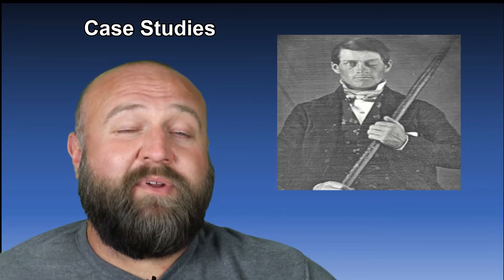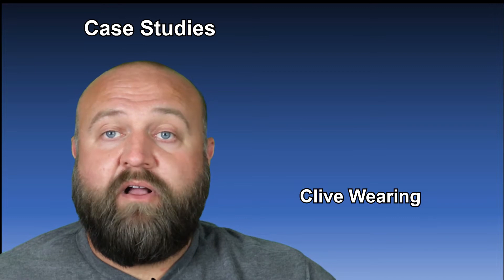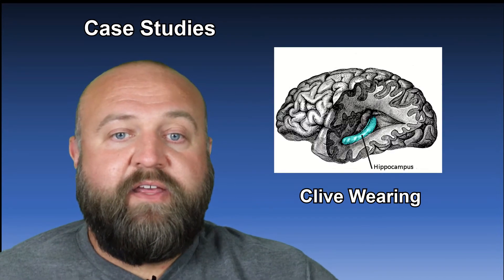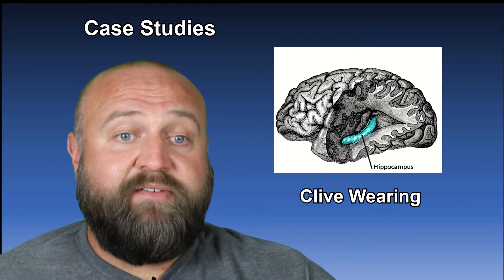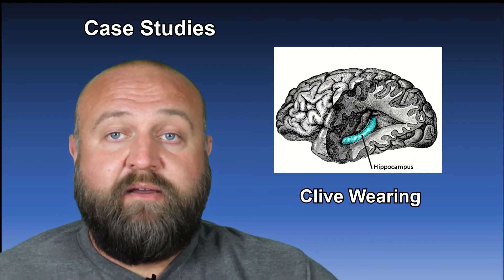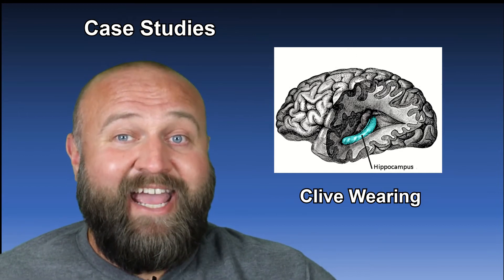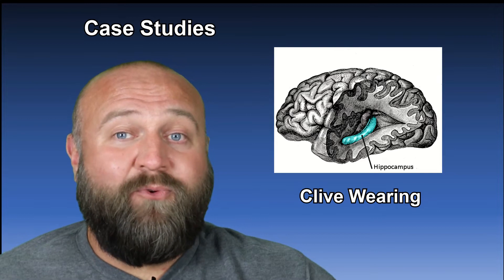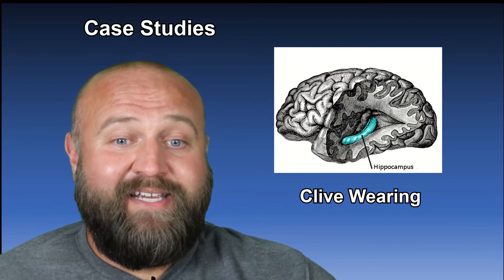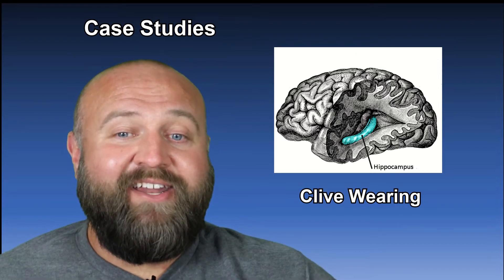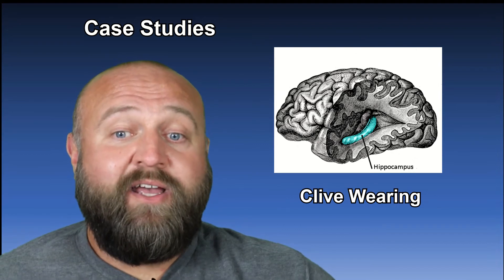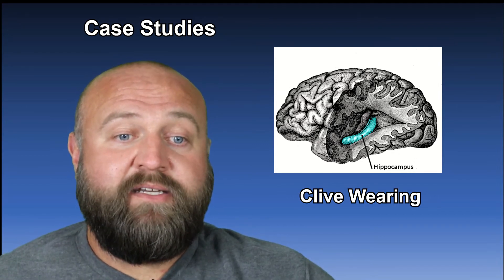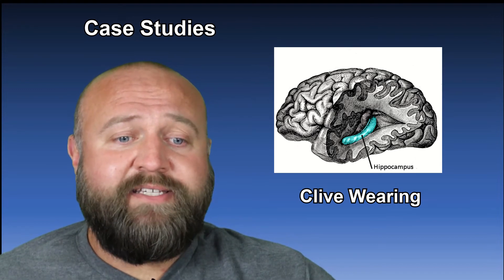Another example is a man named Clive Wearing. Clive experienced a viral infection in the 1980s that damaged a part of his brain called the hippocampus, which is important for making new memories. When it was damaged by the infection, it damaged Clive's ability to form new memories. Clive is still alive today, in his 80s, and has lived for more than 40 years without the ability to form new memories — which would definitely make for a good topic for a case study.